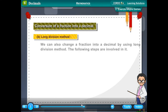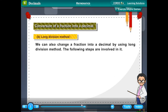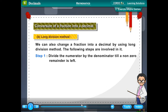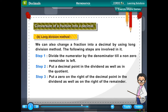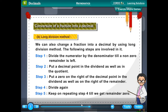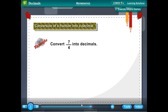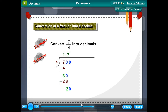Long division method: We can also change a fraction into a decimal using long division. Step 1: Divide the numerator by the denominator until a non-zero remainder is left. Step 2: Put a decimal point in the dividend and in the quotient. Step 3: Put a zero to the right of the decimal point in the dividend and to the right of the remainder. Step 4: Divide again. Step 5: Repeat until the remainder is 0. Example: 7/4 = 1.75.